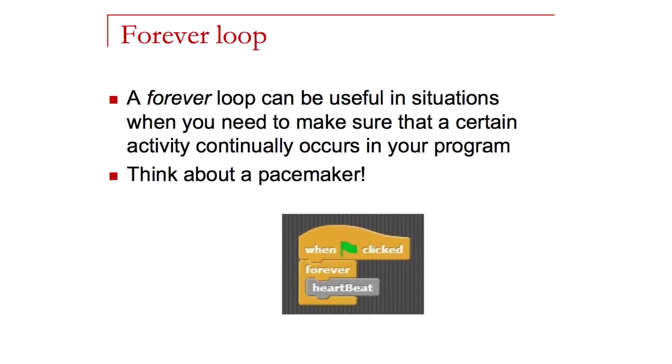There are three kinds of loops we'll be studying with SNAP. The forever loop is a type of infinite loop that continually executes forever. The repeat until is a loop that continues to execute until a certain condition occurs. And then the repeat loop is what we call a counting loop, or in some languages a for loop. It's a loop that repeats a specific number of times.